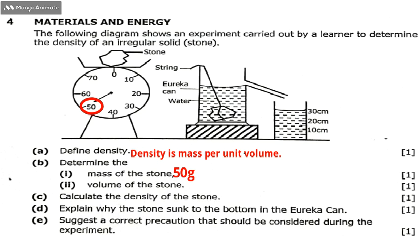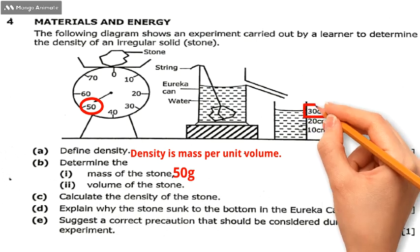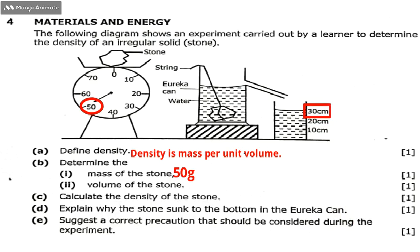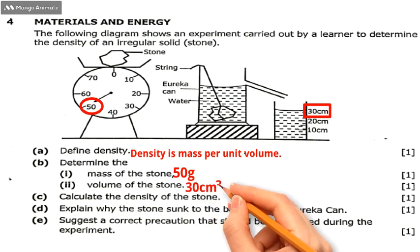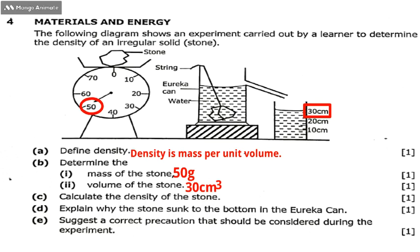Question 4b(ii) is: determine the volume of the stone. We get the volume from the measuring cylinder on the far right. The volume of the liquid in the cylinder is 30 cm³.